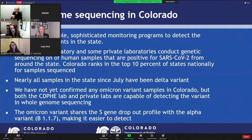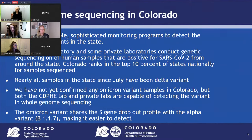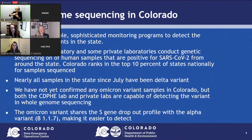Colorado has multiple sophisticated monitoring programs set up to detect the presence of variants. The CDPHE laboratory and some private labs are currently conducting sequencing on positive human COVID-19 samples. Colorado ranks in the top 10% of states nationally for samples sequenced, and nearly all samples sequenced since July have been the Delta variant. We have not confirmed any Omicron variant samples in Colorado, but both CDPHE lab and private labs are capable of detecting this variant through whole genome sequencing. This Omicron variant has the S-drop profile, shared with the Alpha variant, making it easier to detect. However, the presence of an S-drop does not immediately mean Omicron — we want sequence confirmation before declaring its presence.